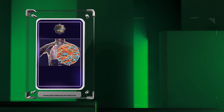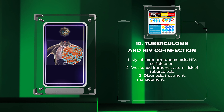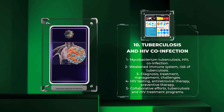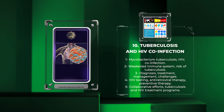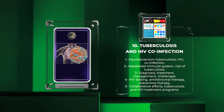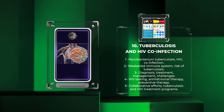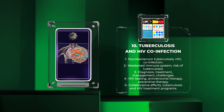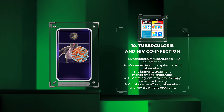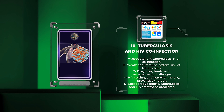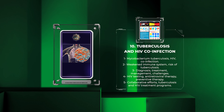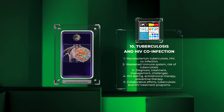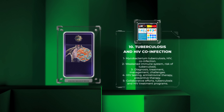In individuals infected with both Mycobacterium tuberculosis and HIV, the weakened immune system caused by HIV increases the risk of tuberculosis. Diagnosis, treatment, and management of this co-infection pose significant challenges. It is important to test for HIV early, provide antiretroviral therapy, and administer preventive therapy for latent tuberculosis infection. Collaborative efforts between tuberculosis and HIV treatment programs are crucial for improving patient outcomes and slowing disease progression.